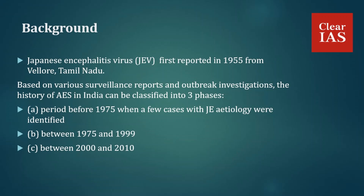Based on various surveillance reports and outbreak investigations, the history of AES in India can be classified into three phases. The first phase is the period before 1975, when a few cases with Japanese Encephalitis etiology were identified. The second phase is between 1975 and 1999, when more Japanese Encephalitis cases were reported with frequent outbreaks.